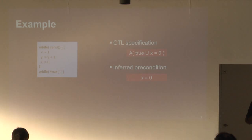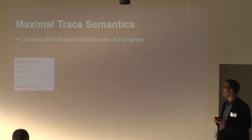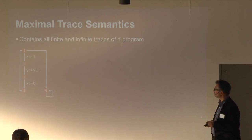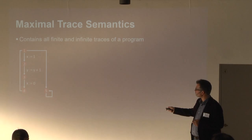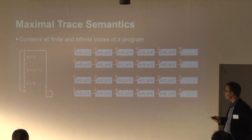We do this by abstract interpretation. Our starting point is to define a concrete semantics beginning from a maximal trace semantics that contains all the finite and infinite traces the program can produce. We transform the program into a control flow graph — you see five program points with the transitions between them, the first loop and the second loop. The maximal trace semantics contains all the traces; here are four of them, but of course there are infinitely more.